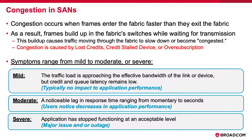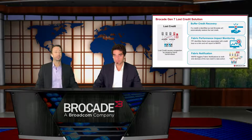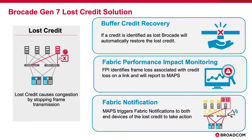Since we can identify these conditions in the fabric, we want to mitigate and avoid any considerable or drastic application performance impact. Years ago we introduced features that are still very valuable for addressing and identifying congestion. We put in place buffer credit recovery, introduced back with our Gen 5 products many years ago. We added capabilities within the MAPS suite — the monitoring and alerting policy suite — specifically fabric performance impact monitoring, where we were able to detect conditions in the fabric where a device or communication is slowing down and flag that congestion.